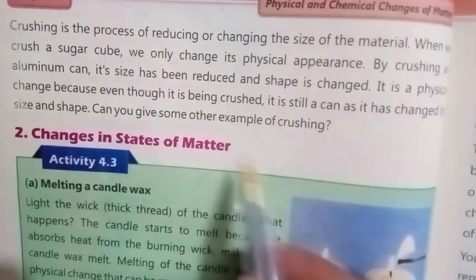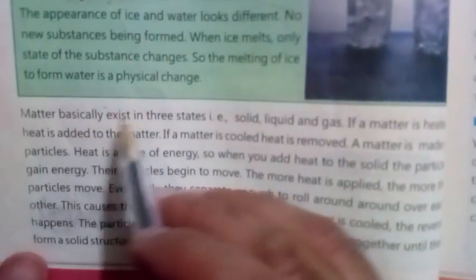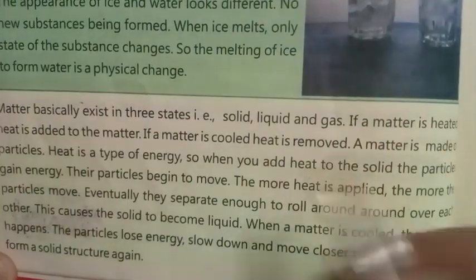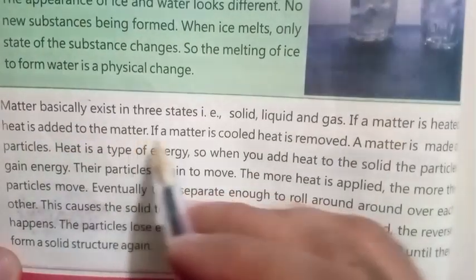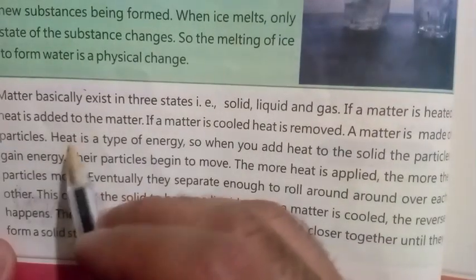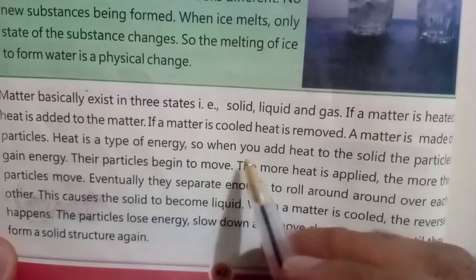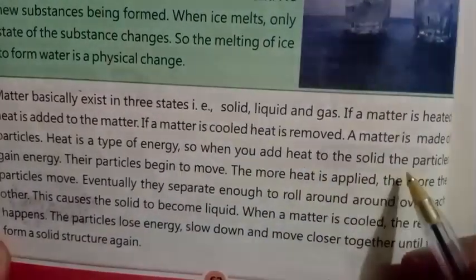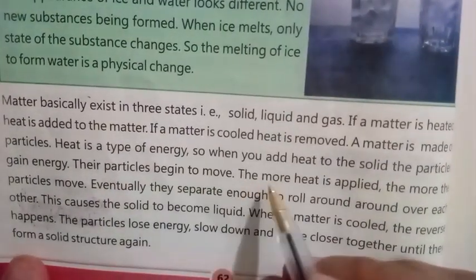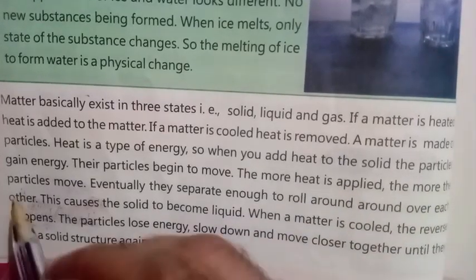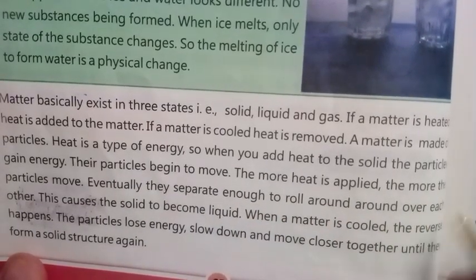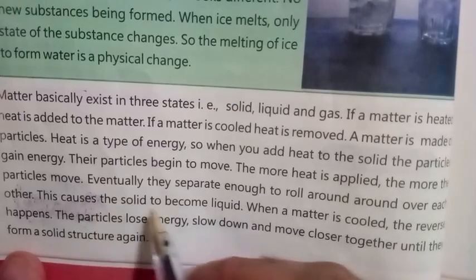Number two: Changes in states of matter. Matter basically exists in three states: solid, liquid, and gas. If a matter is heated, heat is added to the matter. If matter is cooled, heat is removed. Matter is made of particles, and heat is a type of energy. When you add heat to a solid, the particles gain energy and begin to move. The more heat is applied, the more the particles move, until they spread enough to roll over each other, causing the solid to become liquid.